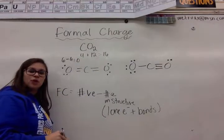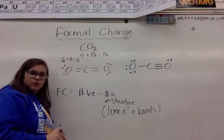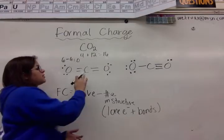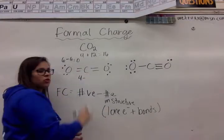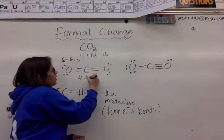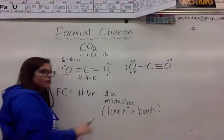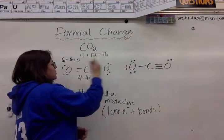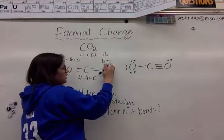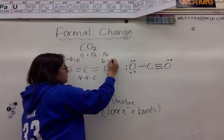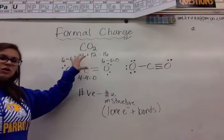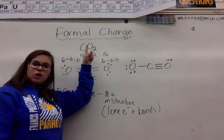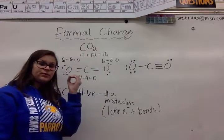So the formal charge for oxygen is 0. We're going to try the same for carbon. Carbon has 4 valence electrons minus 1, 2, 3, 4 things on carbon. Again, is 0. And this oxygen is going to be the same as this one. We have 6 valence electrons minus 6 things. 1, 2, 3, 4, 5, 6. So in this structure, all atoms have a formal charge of 0.